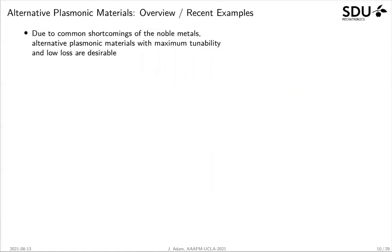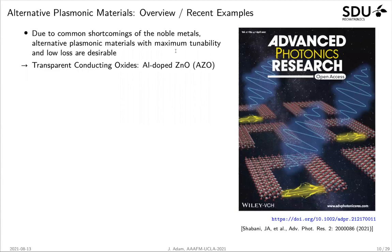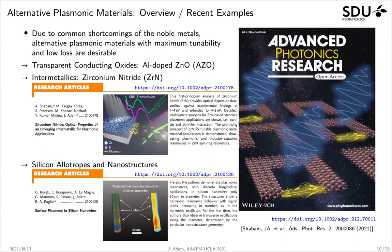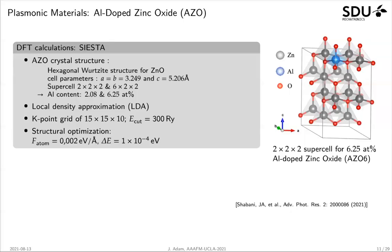I want to show some of our latest works on alternative plasmonic materials. I want to introduce transparent conducting oxides — in our case aluminum-doped zinc oxide (AZO). I also want to talk about the intermetallic family member zirconium nitride, which is an excellent plasmonic material very close to the behavior of gold. And then I want to talk about silicon, where you can also introduce plasmonic behavior in nanostructures like small silicon nanowires. Let's start with aluminum-doped zinc oxide.